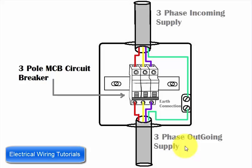Basically, a three-pole MCB circuit breaker has six connection points: three for the input supply and three for outgoing supply to the load. You can connect your incoming supply on the upper terminals or on the bottom terminals.